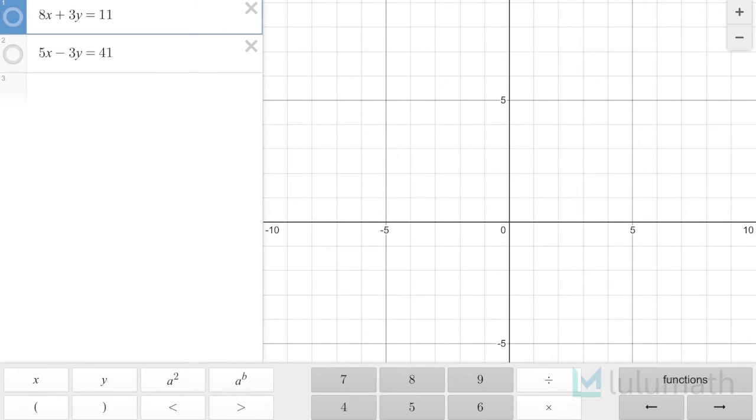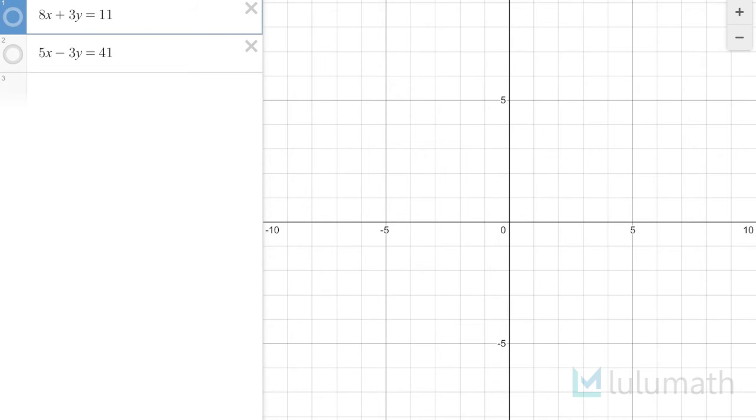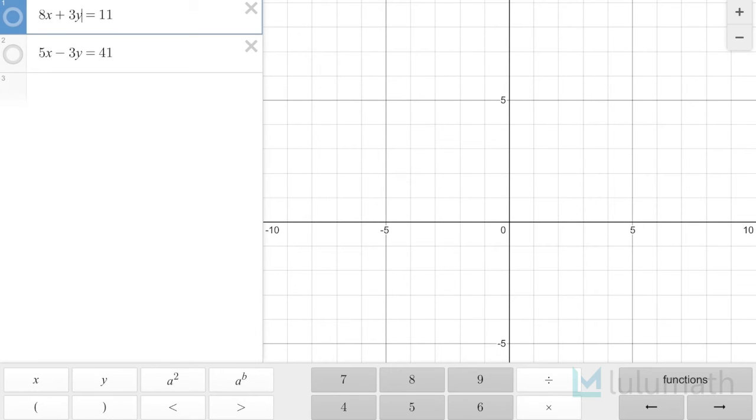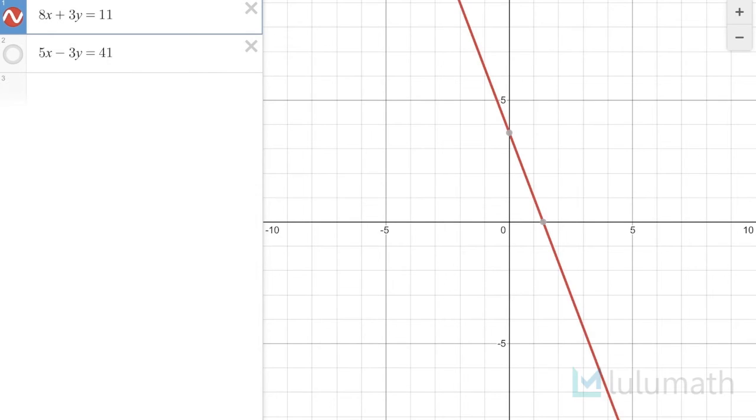So I just want to use Desmos to verify that I have the correct solution. If you notice here, our equation was 8a plus 3b. Here I'm using x and I'm using y because in order to be able to graph it out, I need to use x and y. But it's the exact same thing. I'm just replacing a with x and b with y.